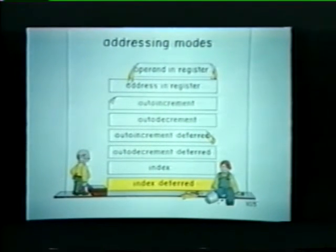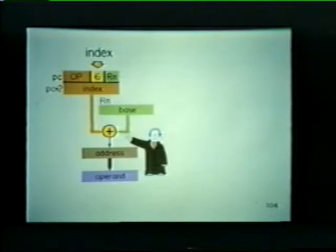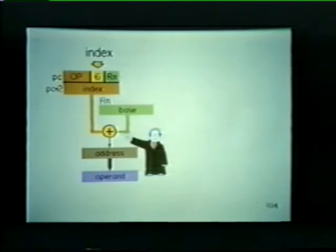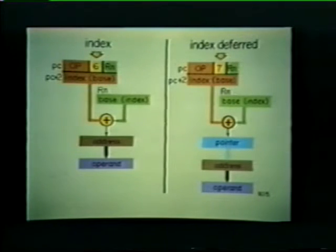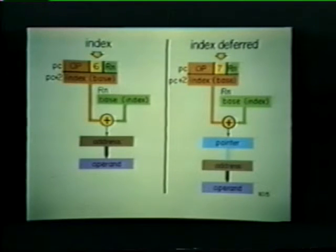Let's quickly compare the index and index deferred modes. When an instruction calls for the index mode, the processor takes the base value and adds it to an index word, producing an effective address of the operand — with the base stored in a GPR and the index word following the instruction. When index deferred is used, the base value is again summed with an index word. However, the result is a pointer to an address rather than the actual address. In other words, the pointer is first used to locate the address, and once the CPU retrieves this address, it can then be used to fetch the desired operand.